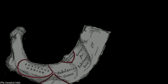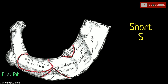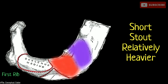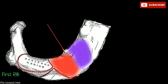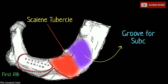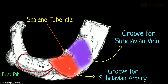The first rib is somewhat different. It is short, stout, and relatively heavier than the others. On the superior surface, there are two grooves divided by a tubercle called the scalene tubercle, where the anterior scalene muscle is inserted. The groove in front is occupied by the subclavian vein, and the groove behind is occupied by the subclavian artery.